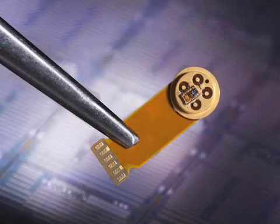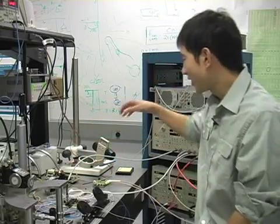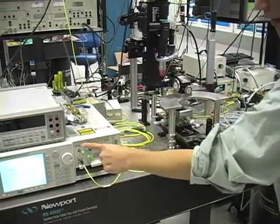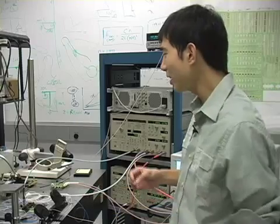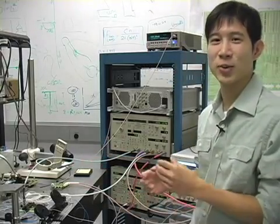After we mount the package device to this board here, we connect it to several other equipments. The first thing is the laser, which is here. It's a laser that emits light at 1310 nanometers. That's where these APDs or avalanche photodetectors will operate at.